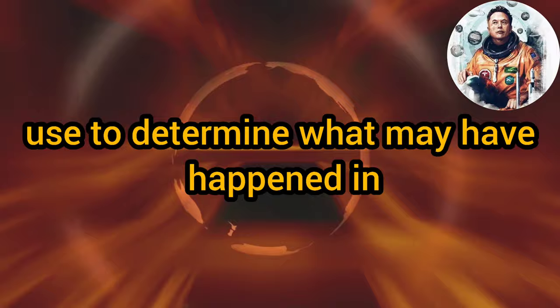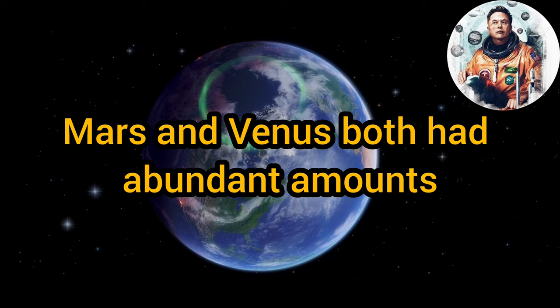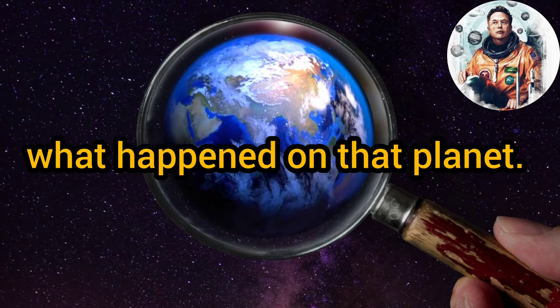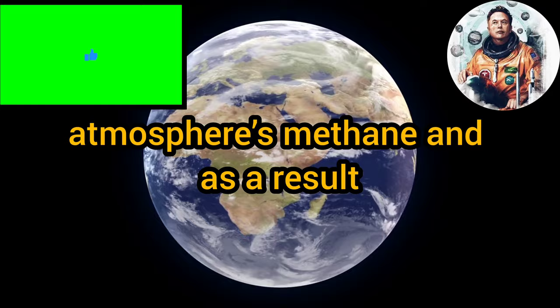Specifically, Mars and Venus both had abundant amounts of methane at one point but lost them over time for unknown reasons. Knowing how much methane a planet has allows scientists to make assumptions about what happened on that planet. In short, we can better determine why Mars and Venus lost their atmospheres, methane, and as a result became what they are today.